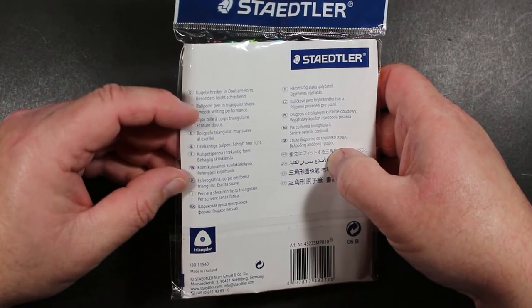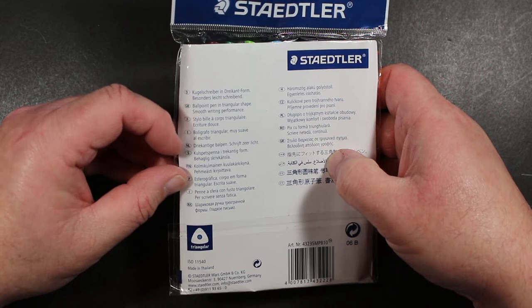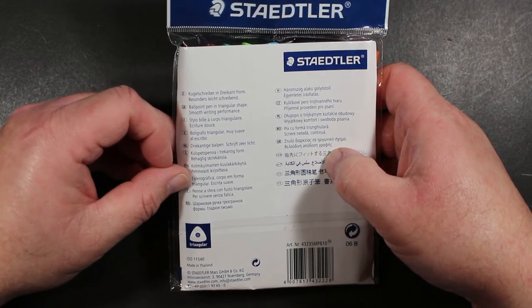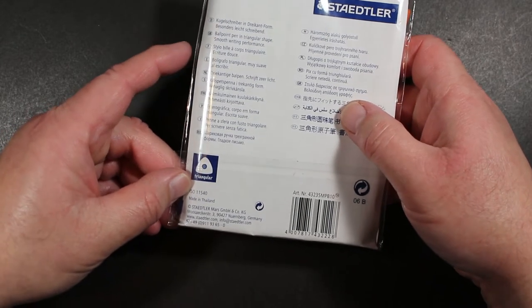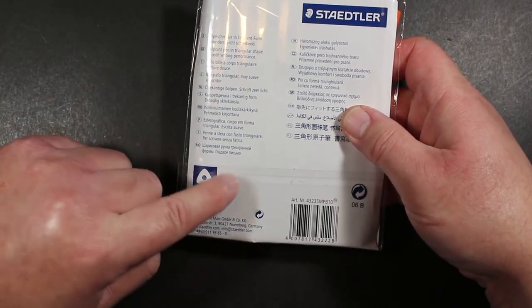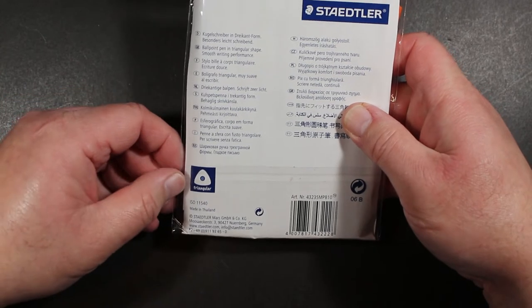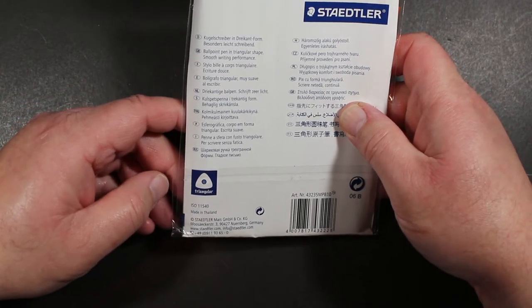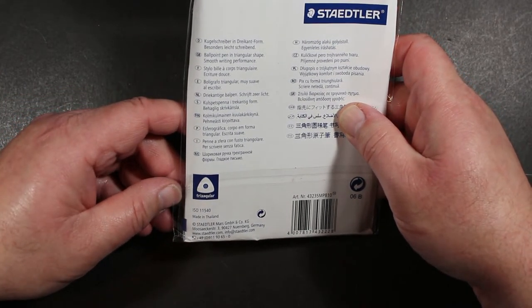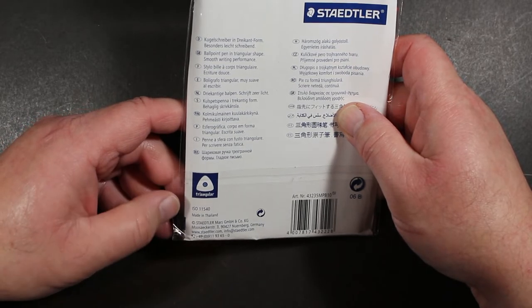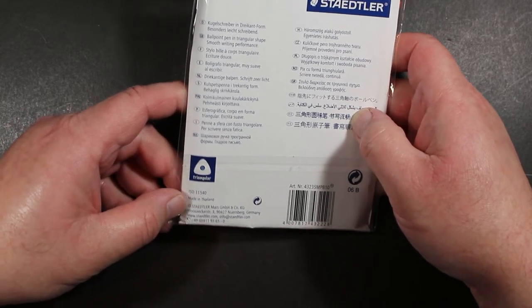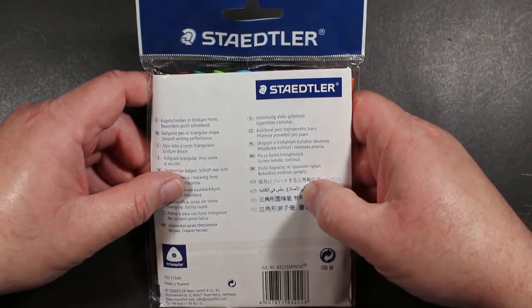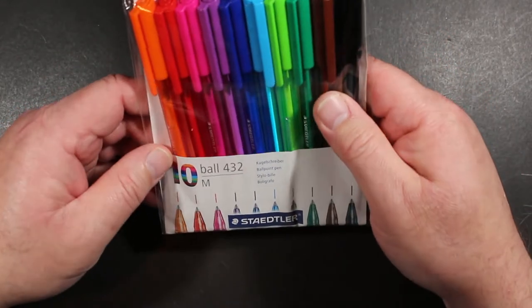So in English, Ballpoint Pen in Triangular Shape. Smooth writing performance. And you can see that it is triangular. Another thing is that the Inkjoy are also a triangular barrel, so that also sort of made that connection with me. These pens are made in Thailand. So there you have it. Pretty straightforward with the packaging.